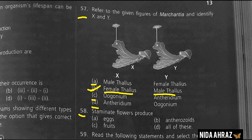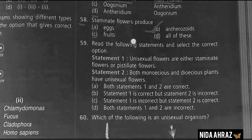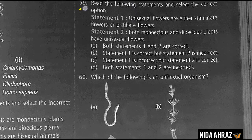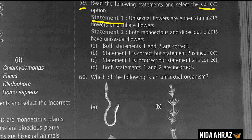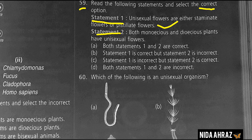Staminate flowers produce antherozoids — option B is the correct choice. Reading the following statements: statement 1, unisexual flowers are either staminate flowers or pistillate flowers — correct; statement 2, both monoecious and dioecious plants have unisexual flowers — incorrect. Statement 1 is correct but statement 2 is incorrect. Option B is the correct choice.